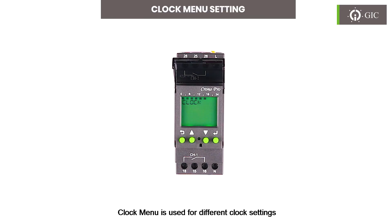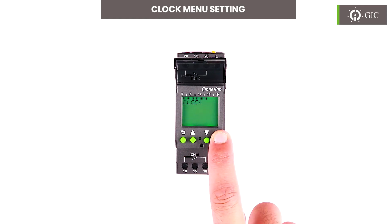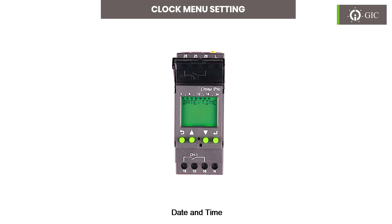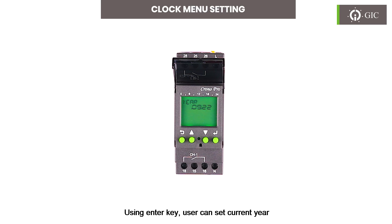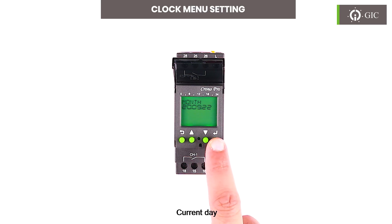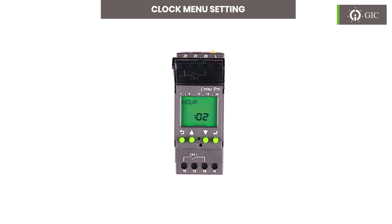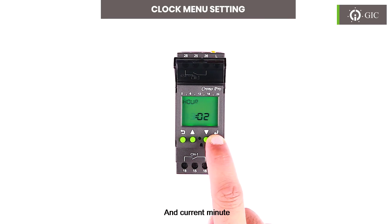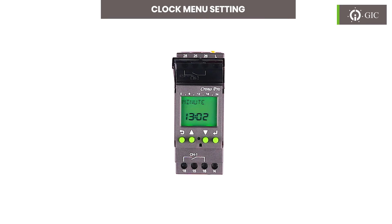The Clock menu is used for different clock settings. Press enter for 'Date and Time.' Using the enter key, the user can set the current year, current month, current day, current hour, and current minute. Press enter to confirm.